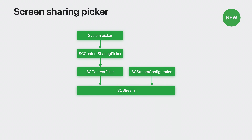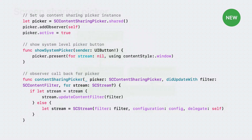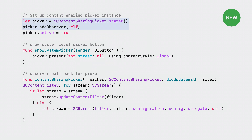Let me show you how easy it is for your application to take advantage of this new screen sharing picker. You'll start with the shared instance for SCContentSharingPicker and add self as an observer so you can get all the appropriate callbacks. In order for the system to recognize your picker instance, set it as active. Once active, the system will know about your picker and your application will be included in the system UI so people will be able to interact with it.